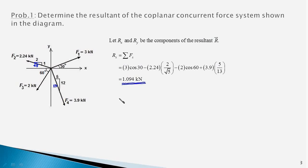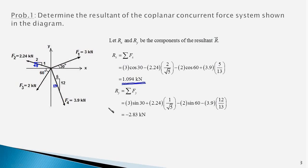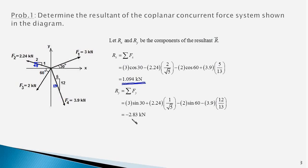This simplifies to Rx equal to 1.094 kilonewtons. Similarly, Ry equals sigma Fy. The Y component of F1 is 3 sin 30 degrees. The Y component of F2 is positive: 2.24 times 1 over root 5. The Y component of F3 is minus 2 sin 60 degrees. F4's Y component is minus 3.9 times 12 over 13 since it points in the minus Y direction. This equation works out to Ry equal to minus 2.83 kilonewtons.